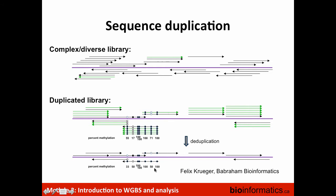The idea of removing duplicates before making these methylation estimates is that you only have one representation per molecule, which will improve the methylation estimate. Removing duplicated reads is especially important if you have a library that's not very complex. Whole genome bisulfite sequencing should typically be more complex, but some enrichment-based strategies are less complex with more duplicates. Looking at the rate of duplicates is one of the quality metrics to check.